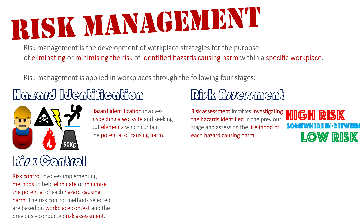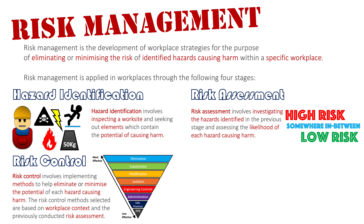Risk control is implementing methods to help eliminate or minimize the potential of each hazard causing harm. The risk control methods selected are based on the workplace context and the previously conducted risk assessment. If something is low risk, we might only need a small control measure. What guides us through risk control is the hierarchy of risk control, where the top and most effective option is eliminating the actual hazard from the workplace.